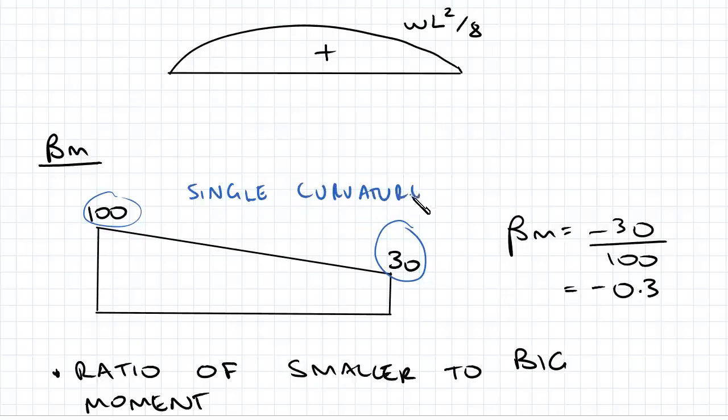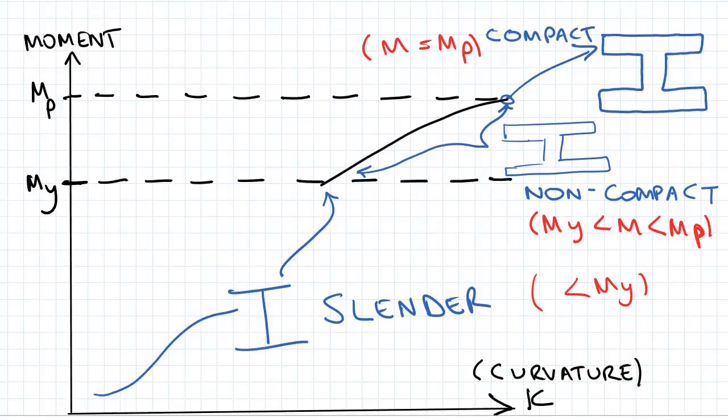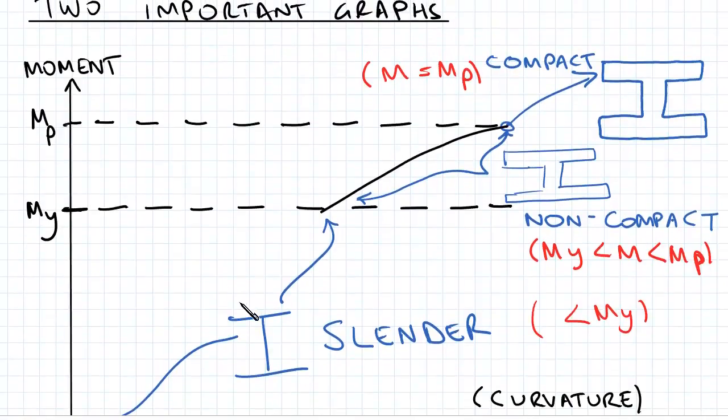Now two important graphs that I mentioned in the earlier topics. We can see it's moment versus curvature. From this we can get an appreciation of whether our beam is slender, because it buckles before it yields.